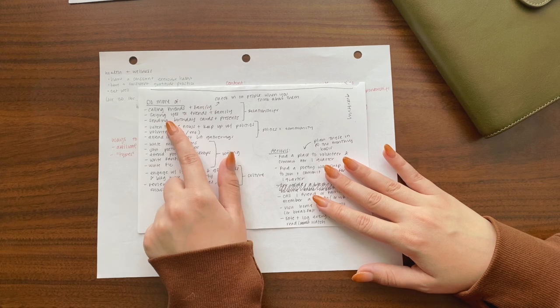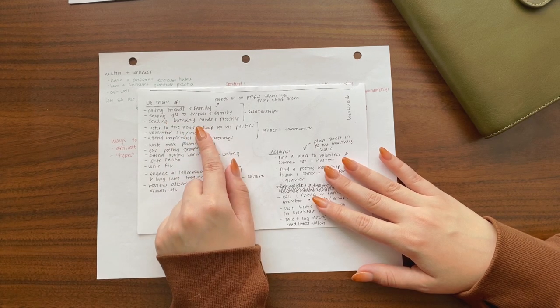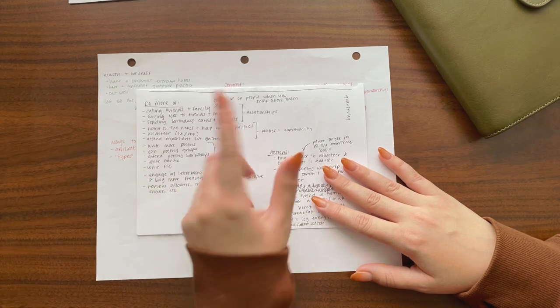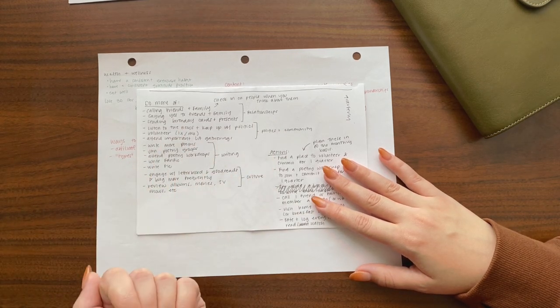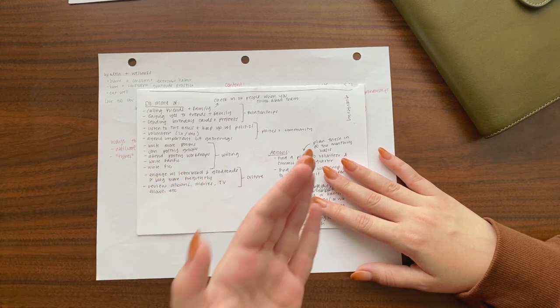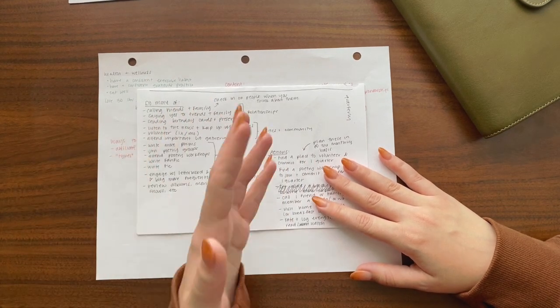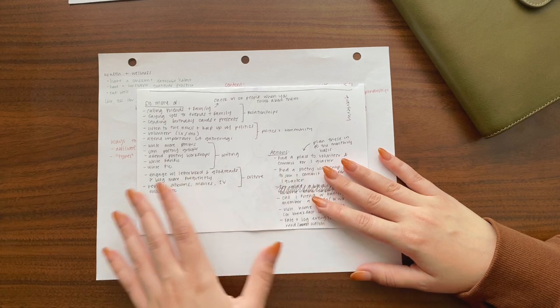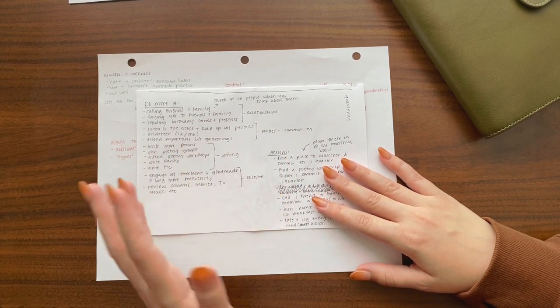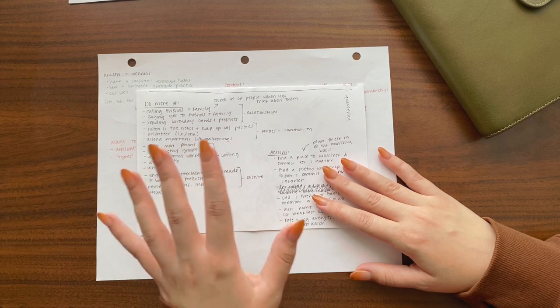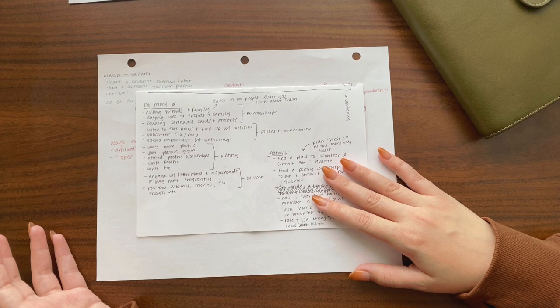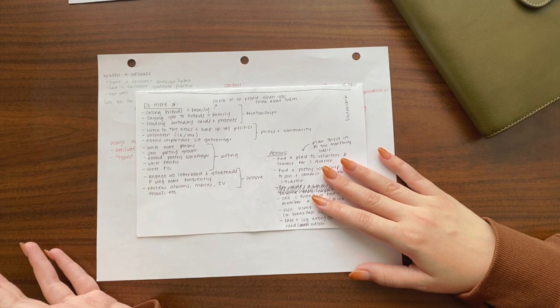So I was essentially taking them out of this system and just making a list of generally things I'd like to do more of knowing that none of these things would be my absolute priority for the year. So I have relationships. I definitely will be sending birthday cards and presents, but I want to call friends and family generally more. I want to check in on people when I think about them generally. That's an easy thing that has a trigger already.